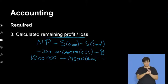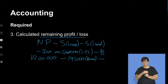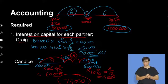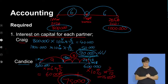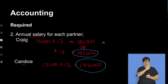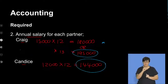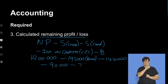Minus for Candice — her salary was 144,000 — so minus 144,000. Then minus the interest on capital for both Candice and Craig. We need to go back a few slides to get that: interest on capital — Craig was 90,000 and Candice was 75,000. So minus 90,000, minus 75,000.